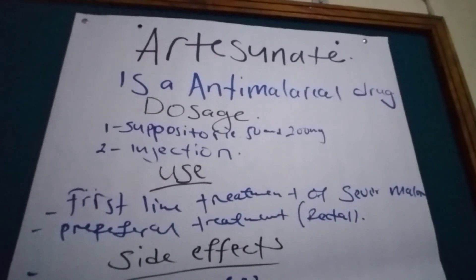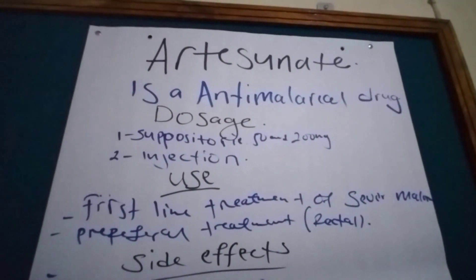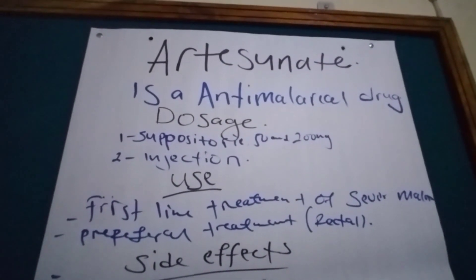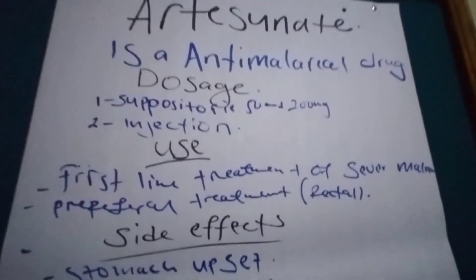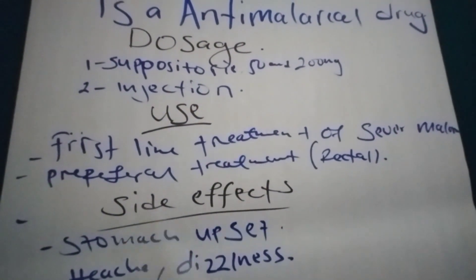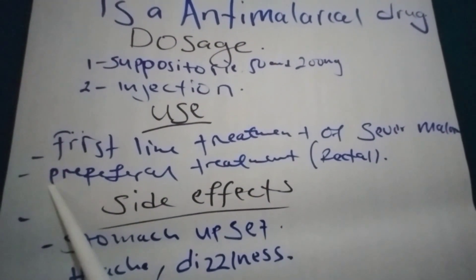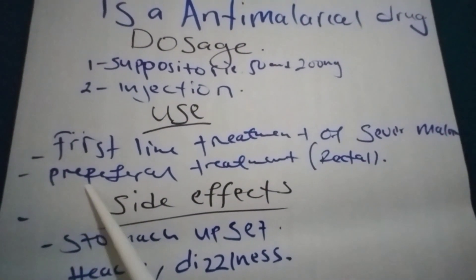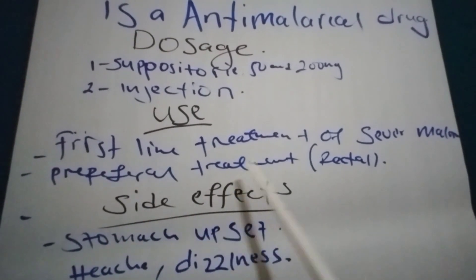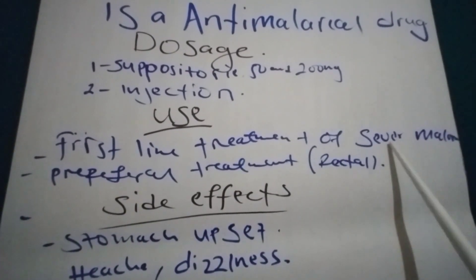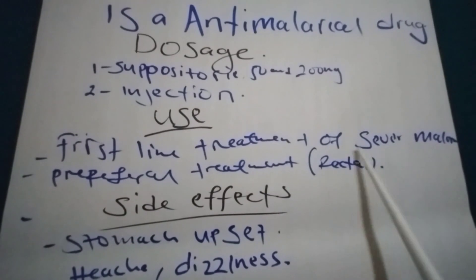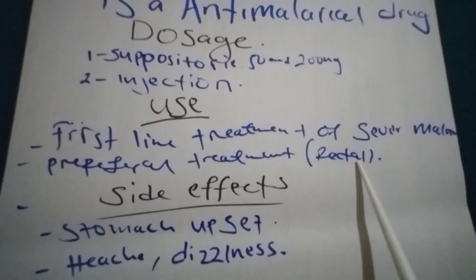What is the use of Artesunate? Artesunate is used as a first-line treatment of severe malaria and it is used as a pre-referral treatment of severe malaria — that is the rectal route, using one of the pessaries.